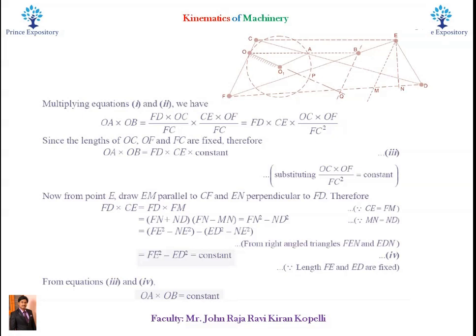Now, from point E, draw E-M parallel to C-F and E-N perpendicular to F-D. Therefore, F-D into C-E is equal to F-D into F-M. This is obtained after replacing C-E with F-M.